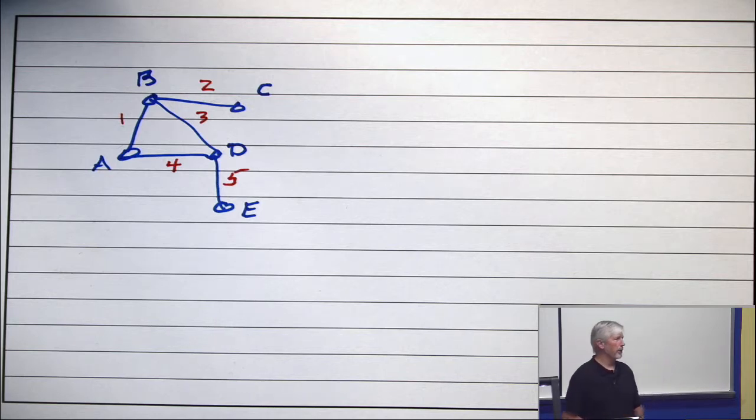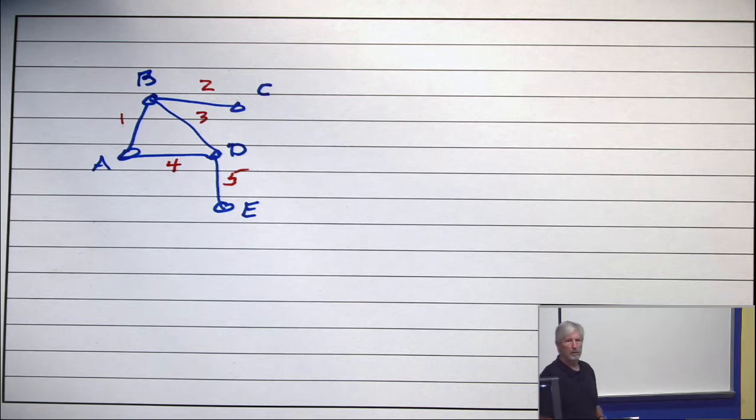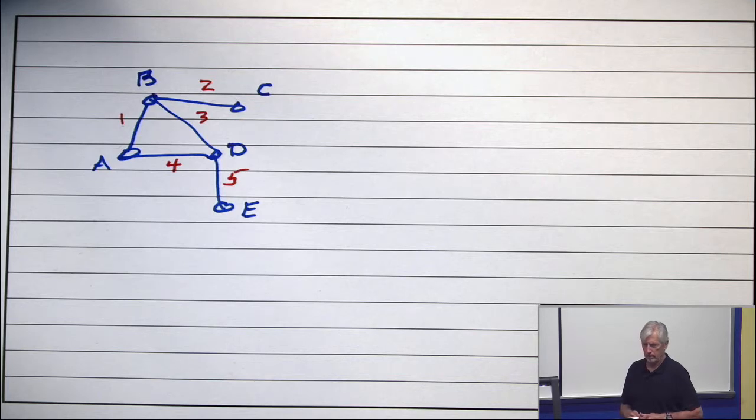Anybody have an explanation? Yeah? You may not be able to hear what she's saying. Let me try to repeat it. She said, can't you just assign to every vertex its set of edges? It's a set of neighbors, the edges incident with it.